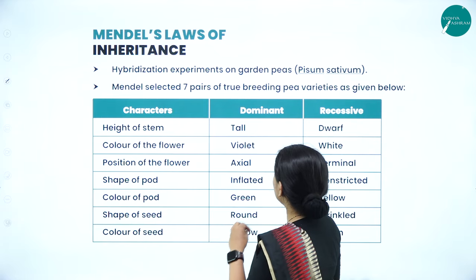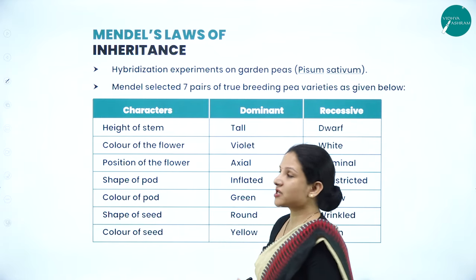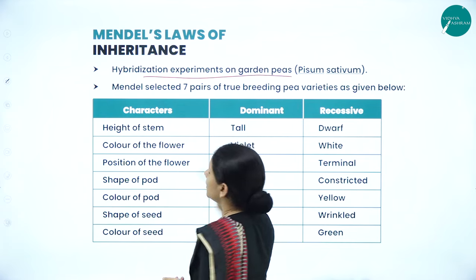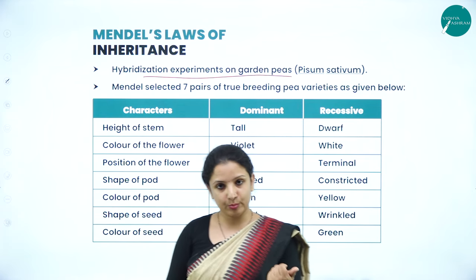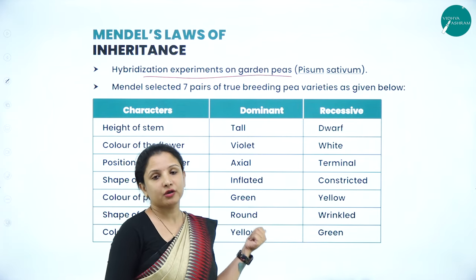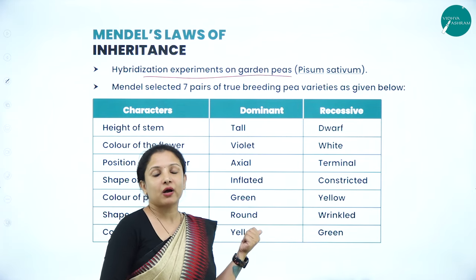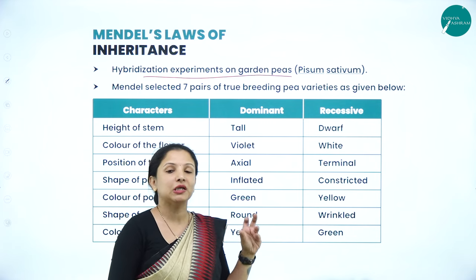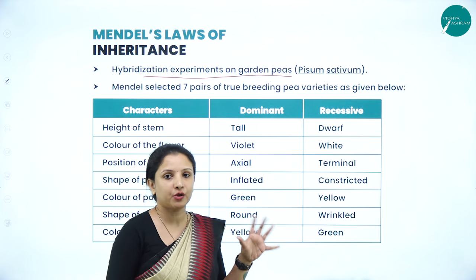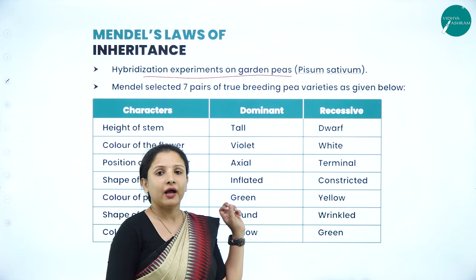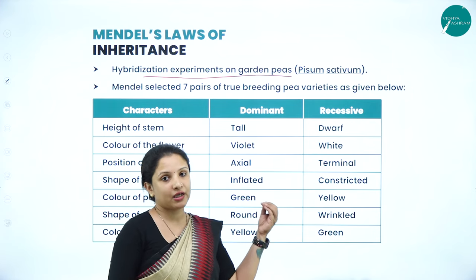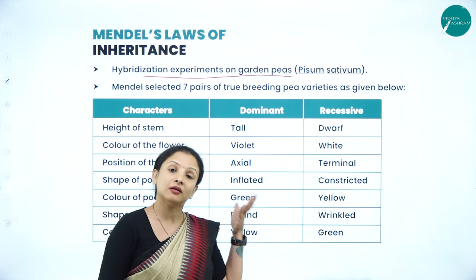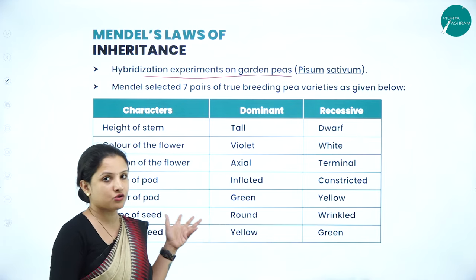In this session, we will talk about some hybridization experiments on garden pea plants. Mendel preferred the garden pea plant because it provided a variety of flower colors — different shades such as beige, pink, white, or purple were available. It was also easy for him to study the variations in characters in a garden pea plant, which is why he chose it.